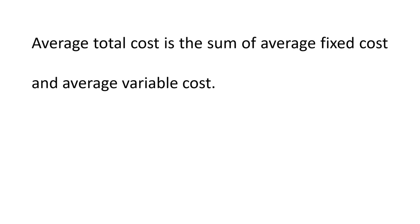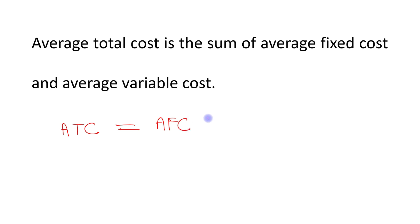Average total cost is the sum of average fixed cost and average variable cost.